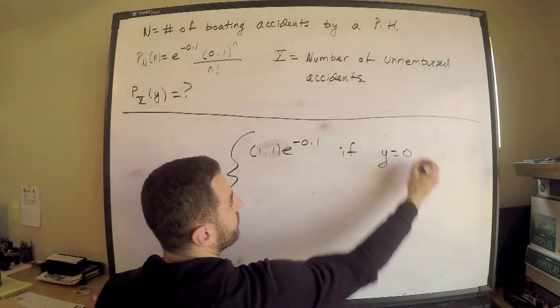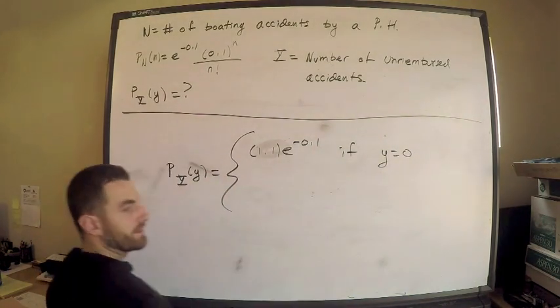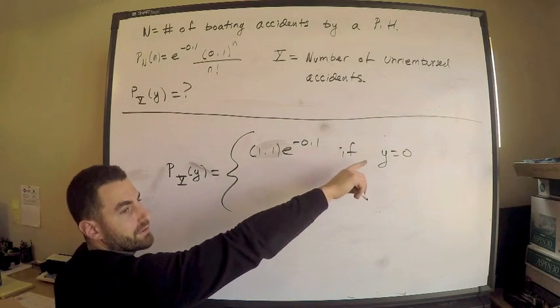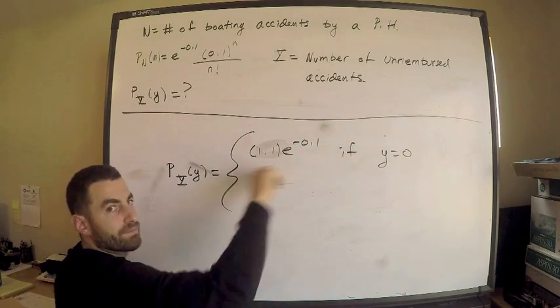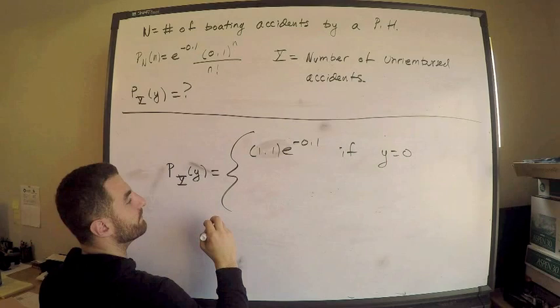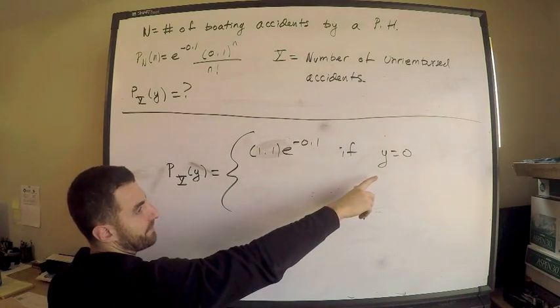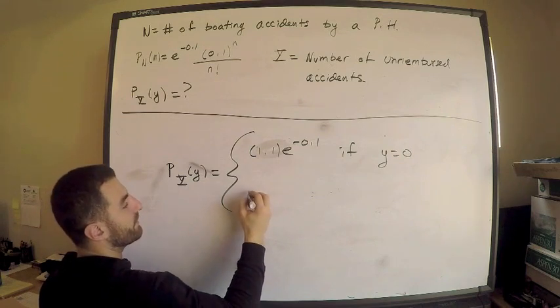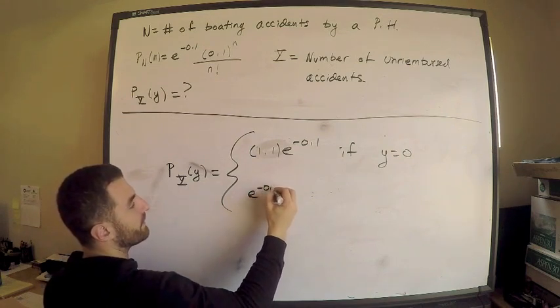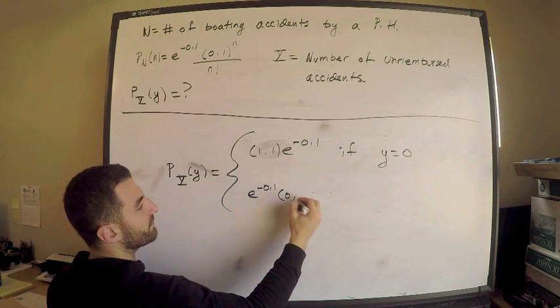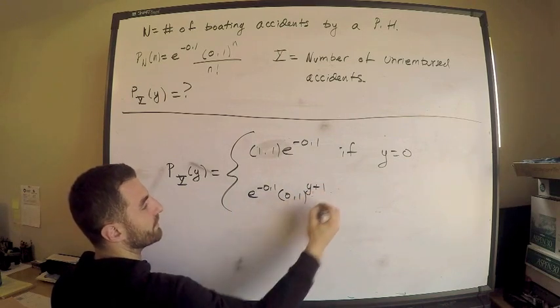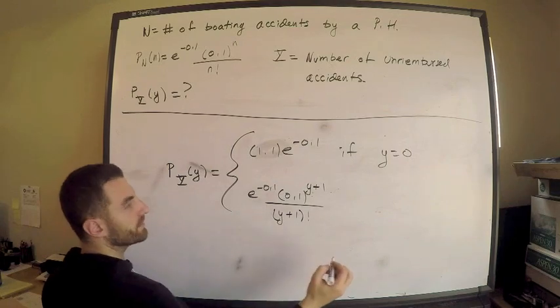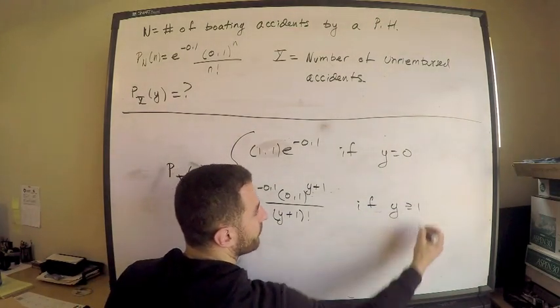Remember how we computed that, because the insurance company pays for the first accident. And next, we have if Y is greater than zero. After that, it's going to be basically the Poisson PMF, e^(-0.1), 0.1^(Y+1), divided by (Y+1) factorial. And this is if Y is greater than or equal to 1.